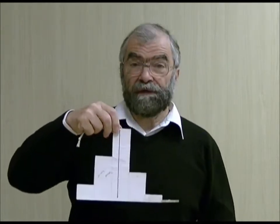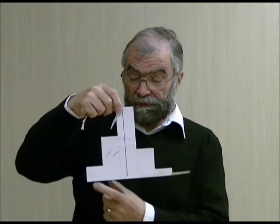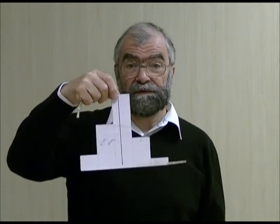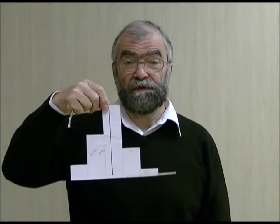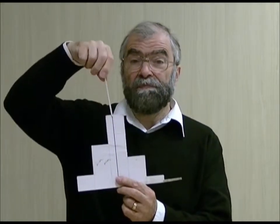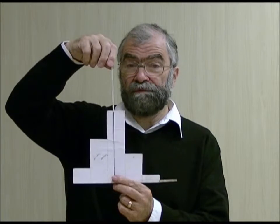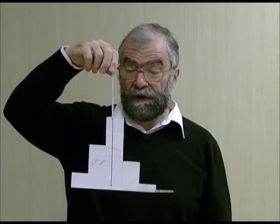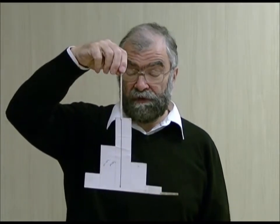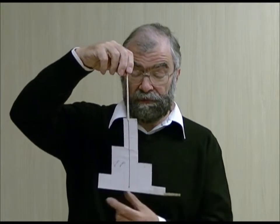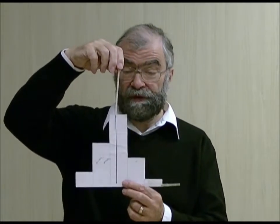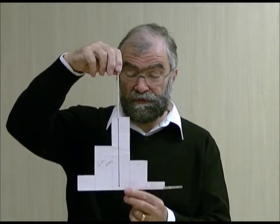If the size of the output signal from each photomultiplier tube is represented by the height of each of these blocks on this cardboard cutout, then the balance point, or the centre of gravity, is our best estimate of the correct location where the gamma-ray occurred. So we need to find the centre of gravity, or the centroid, of this distribution.